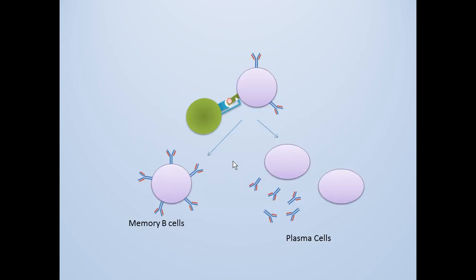The B-cell will then produce memory cells and plasma cells. Memory cells go to the secondary lymphoid tissue for future infections. The plasma cells will actively secrete antibodies.